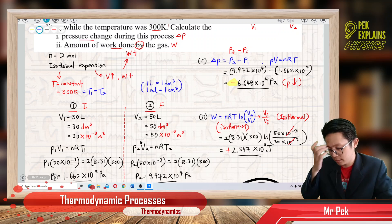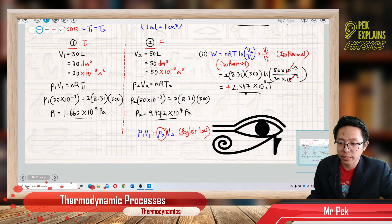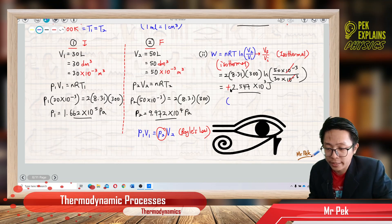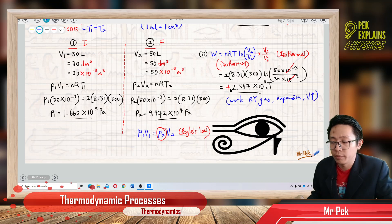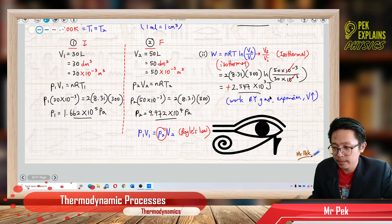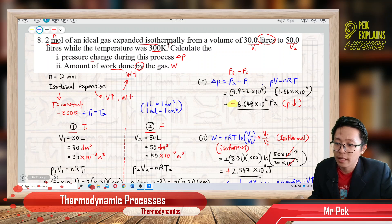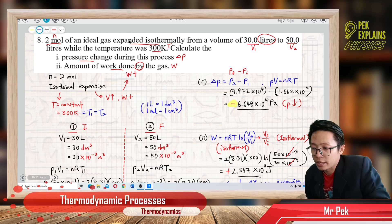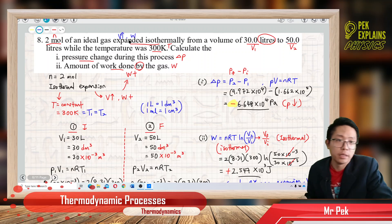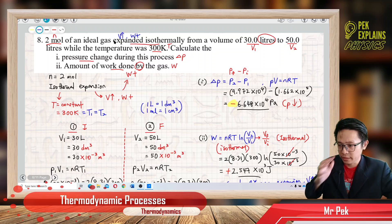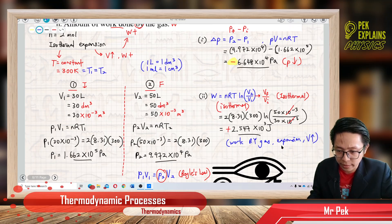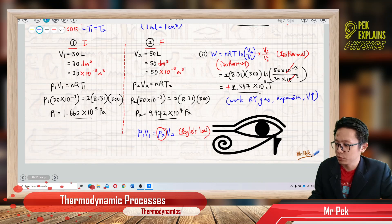The positive work done means the gas does work — work done by gas. During expansion, the volume increases, so the work done is positive. The question also mentioned work done by the gas, so you should get a positive result. A positive work done confirms the gas expands isothermally and does work on the surroundings. That is it for these questions.